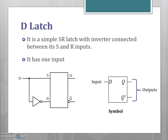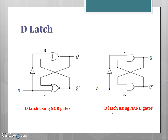The next type of latch is the D latch, also referred to as data latch. It is constructed from the SR latch by connecting one inverter between the S and R inputs. The D latch has only one input D, with Q as the true output and Q-bar as the complemented output. The symbol is shown in the figure. It is essentially an SR latch with an additional inverter — the first diagram shows D latch using NOR gates and the second shows D latch using NAND gates.